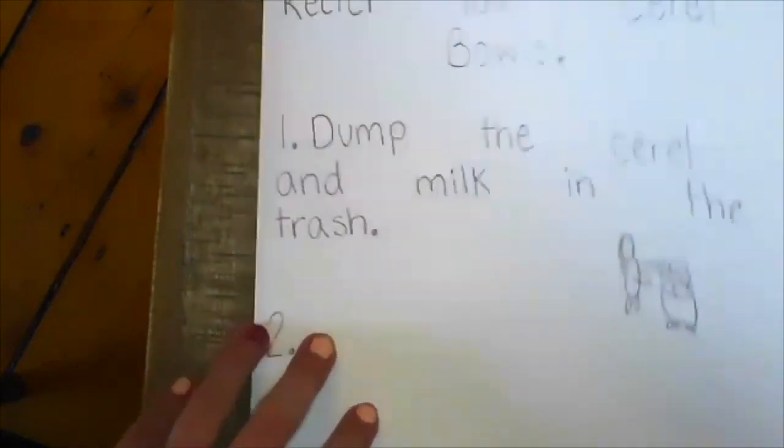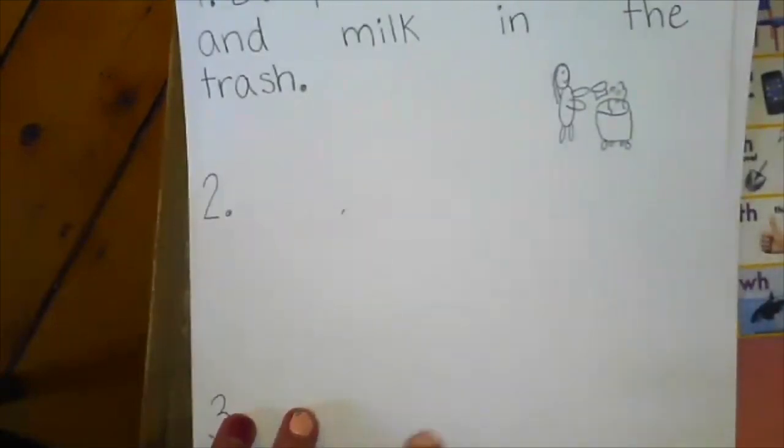So I had step one, notice how I used the number one and the period to show this is the first thing you should do, dump the cereal and milk in the trash, and I drew a little picture. Then I was going to write step two and three. Step two was going to be wash the cereal bowl in the sink. Okay, I'm going to get started writing that.